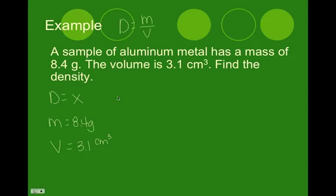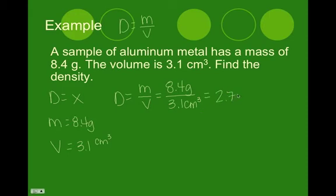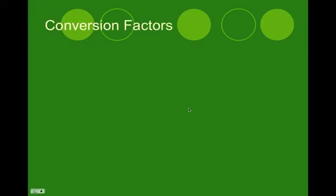So now we need our equation rearranged for our unknown. Super nice thing. It already is. So density equals mass over volume. There's our equation. Now we're going to substitute in our numbers. 8.4 grams, 3.1 centimeters cubed. And now we solve. And this works out too when you put it into your calculator. 2.7 grams per centimeter cubed. You can see your units right here. It makes it nice and easy.